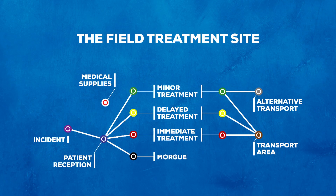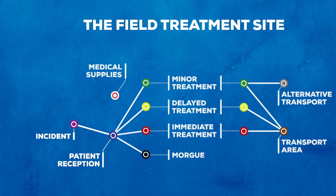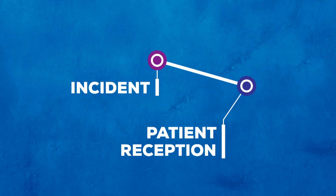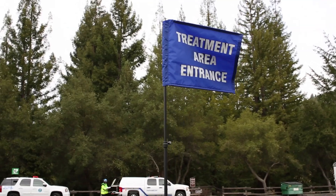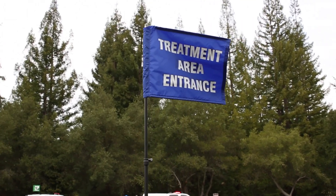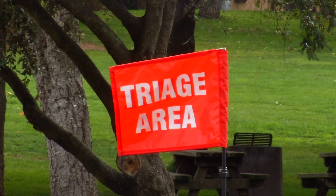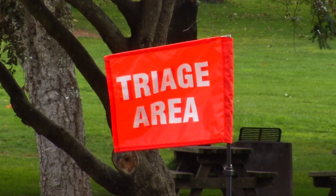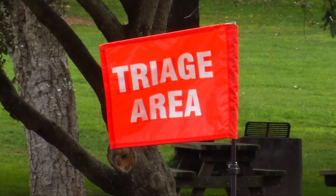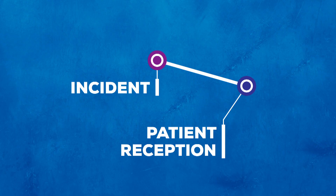The field treatment site consists of several parts. The patient reception area is where patients first enter. This area is staffed with at least one field provider trained in START triage, and patients will be triaged here and assigned to the treatment area.